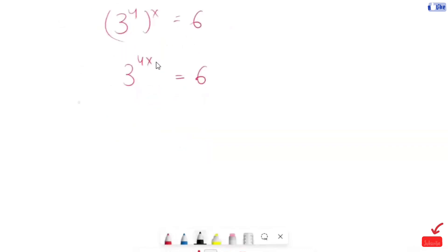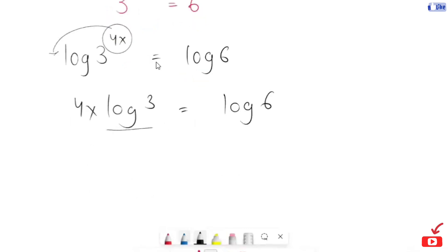So, I'm going to take log for both sides. Log 3 to the power of 4x equals to log of 6. Using the power rule, 4x log of 3 equals log of 6. Dividing by log of 3 on both sides.